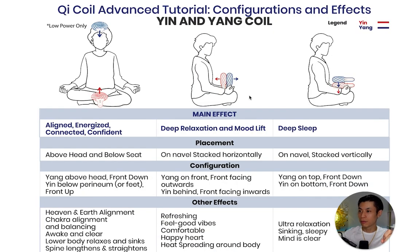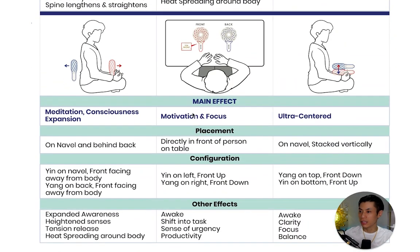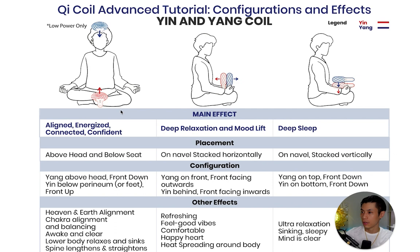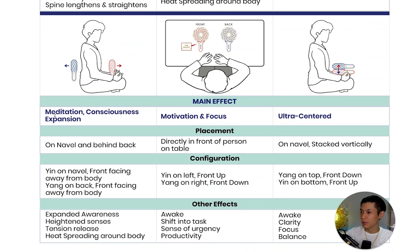Now let's talk about advanced ways of using the yin and yang coils together. Using both coils together creates very profound effects that are even more powerful than a single coil. I've discovered six main configurations you can use with both the yin and yang coil, each with different effects. On this chart, I've ranked them in the order of what I feel is best from my personal experience. The main effects are: aligned energy, connected and confident, deep relaxation and mood lift, deep sleep, meditation and consciousness expansion, motivation and focus, and ultra centered.